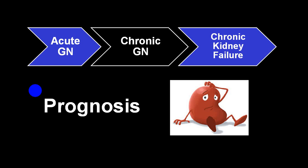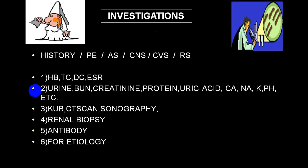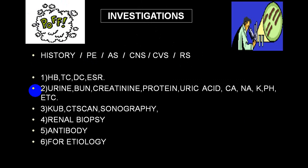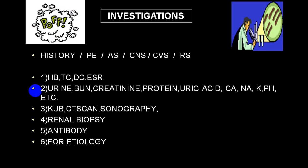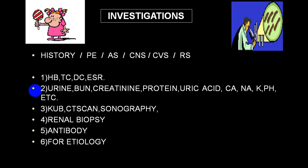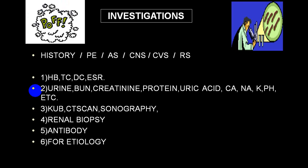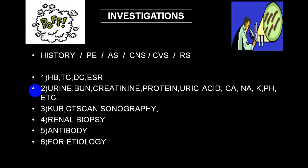Acute glomerulonephritis usually progresses into chronic, then into CKD and end-stage renal failure. In investigations, history, physical examination, and systemic examination of the alimentary system, CNS, CVS, and respiratory system are very useful. CBC gives an idea of renal damage — the person invariably will have pancytopenia, leukopenia, anemia, and thrombocytopenia. Urine shows hematuria, proteinuria, and casts.